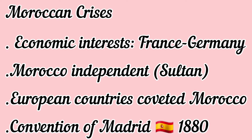So there was a convention — an agreement — in order to distribute Morocco among the representatives of all nations present at the Convention of Madrid in 1880. This agreement of 1880 gave all countries equal opportunities in Morocco. That was unfair for Morocco as a country, but it was established by the most powerful countries.